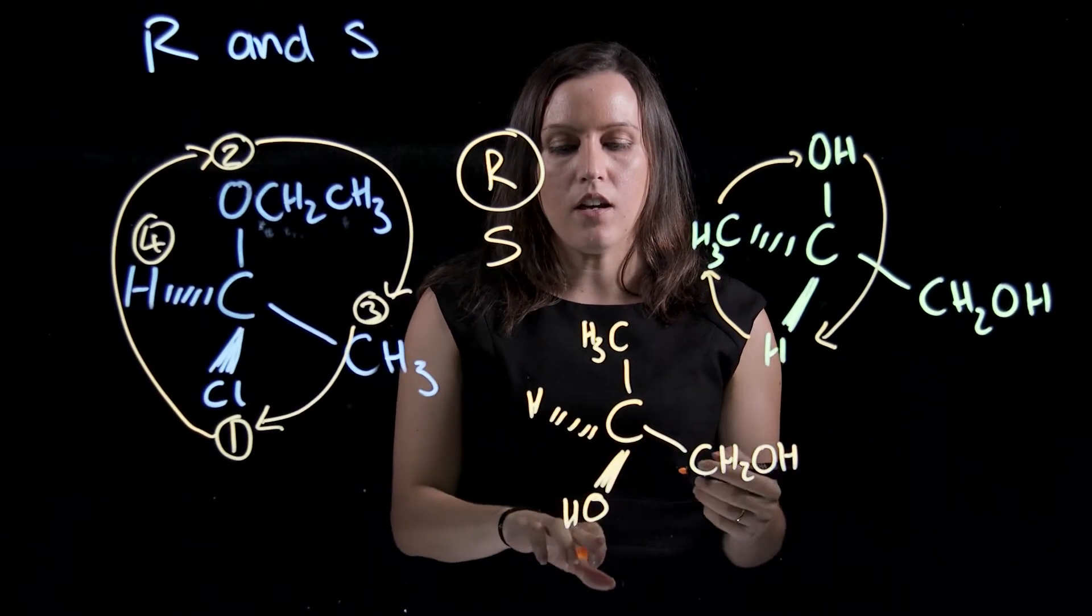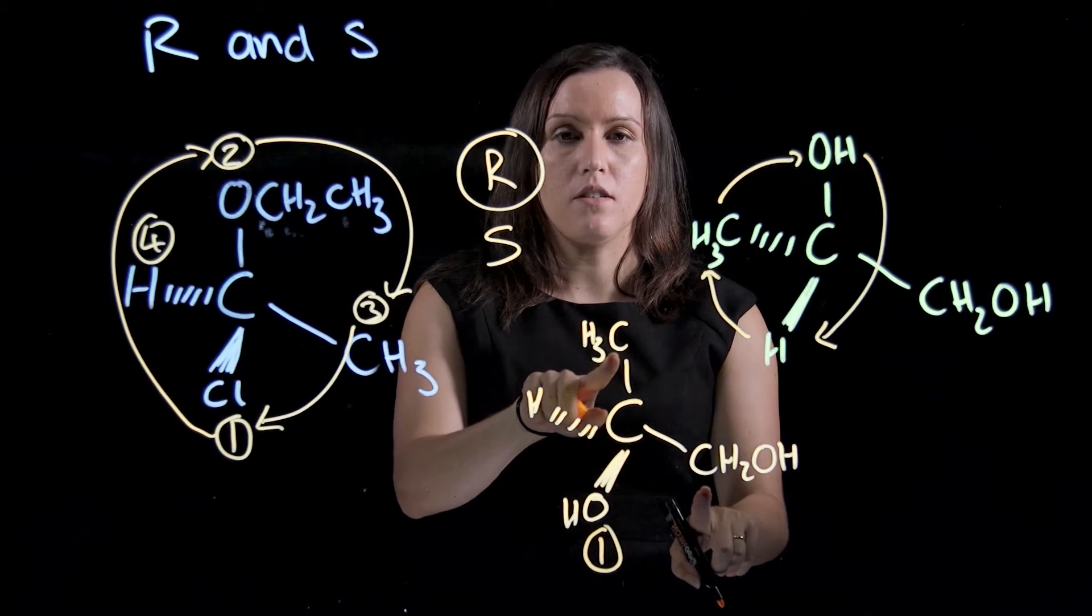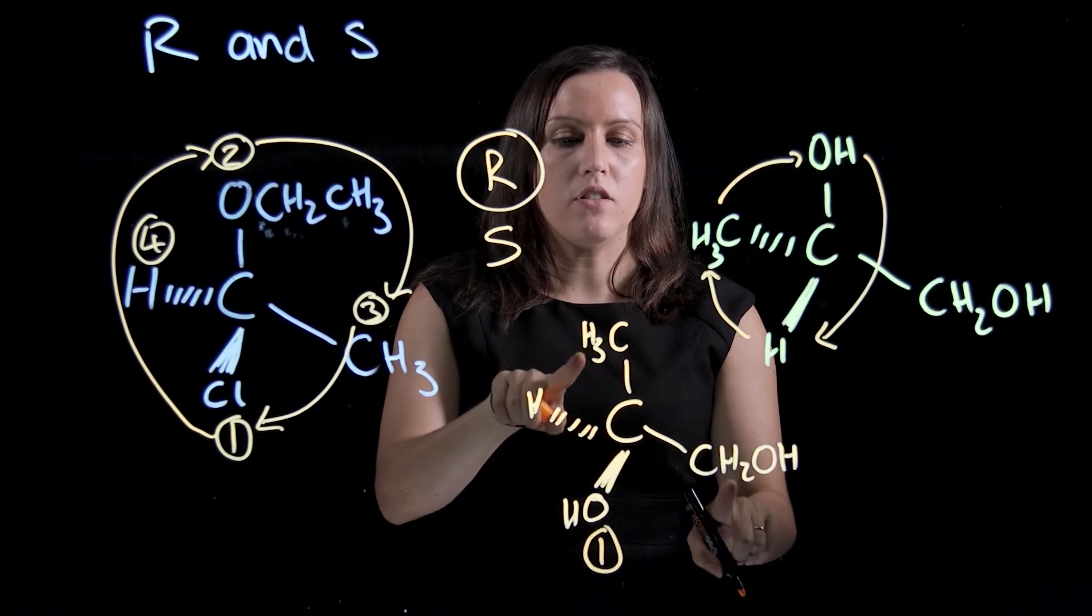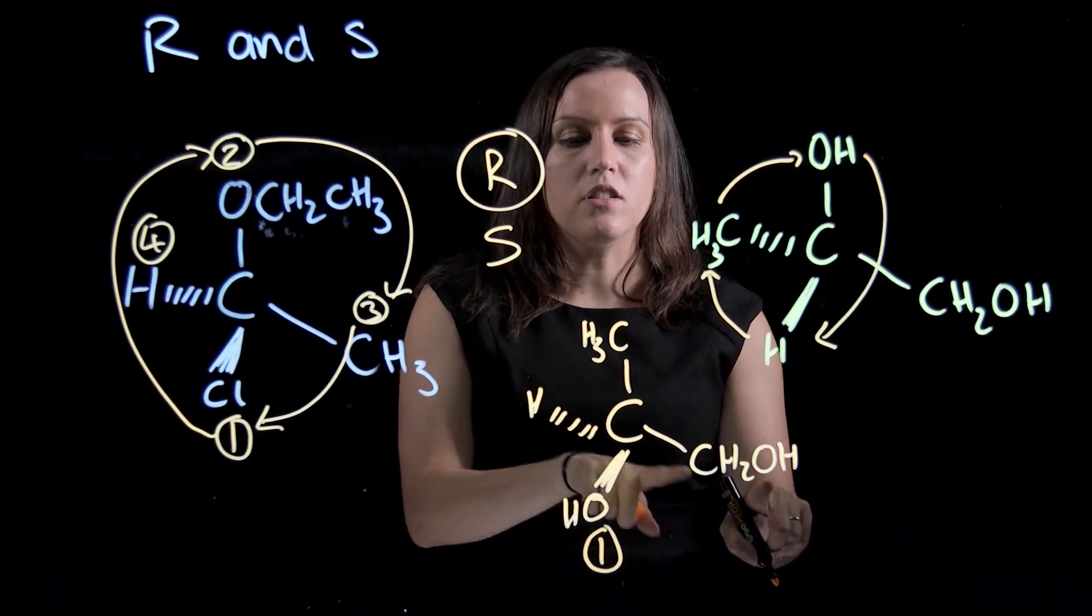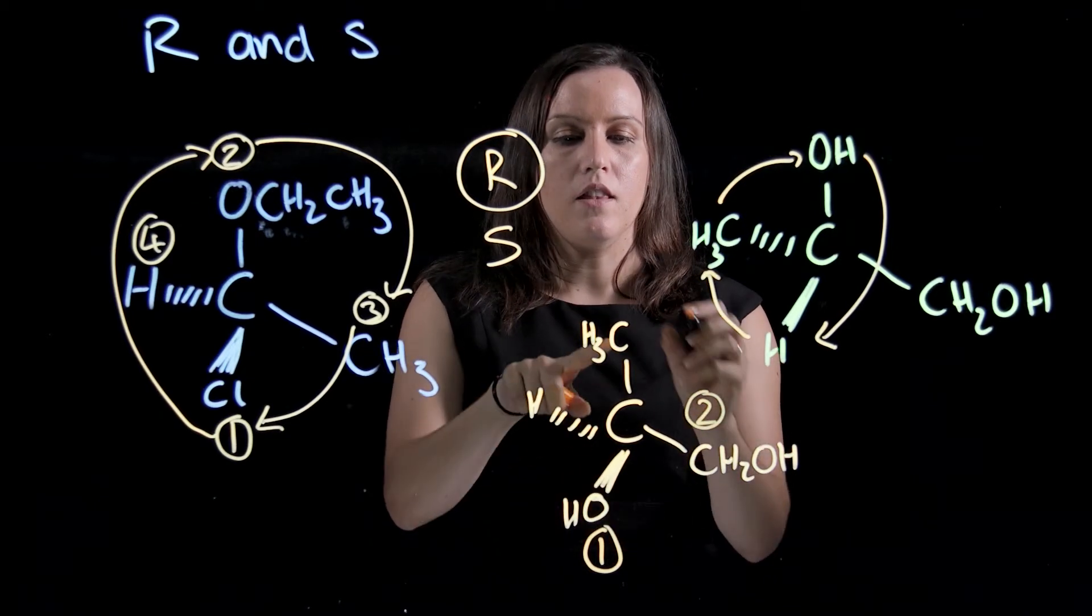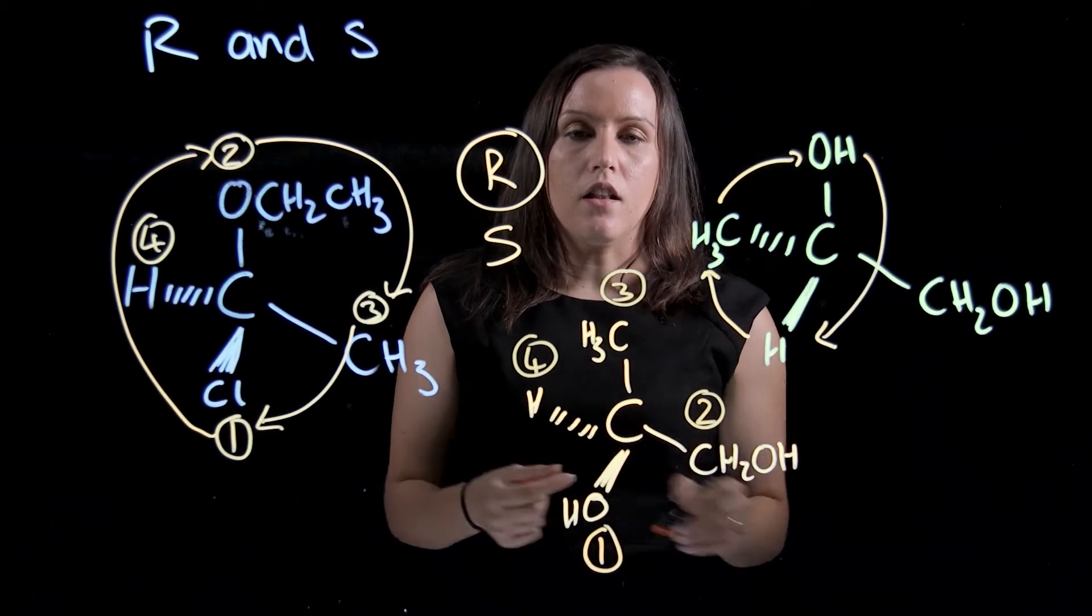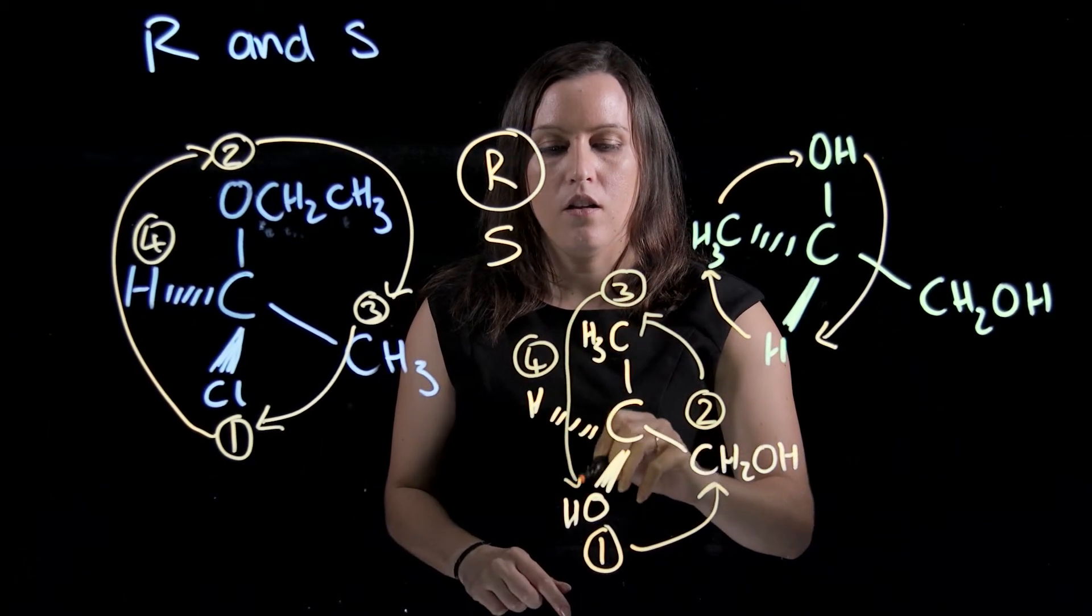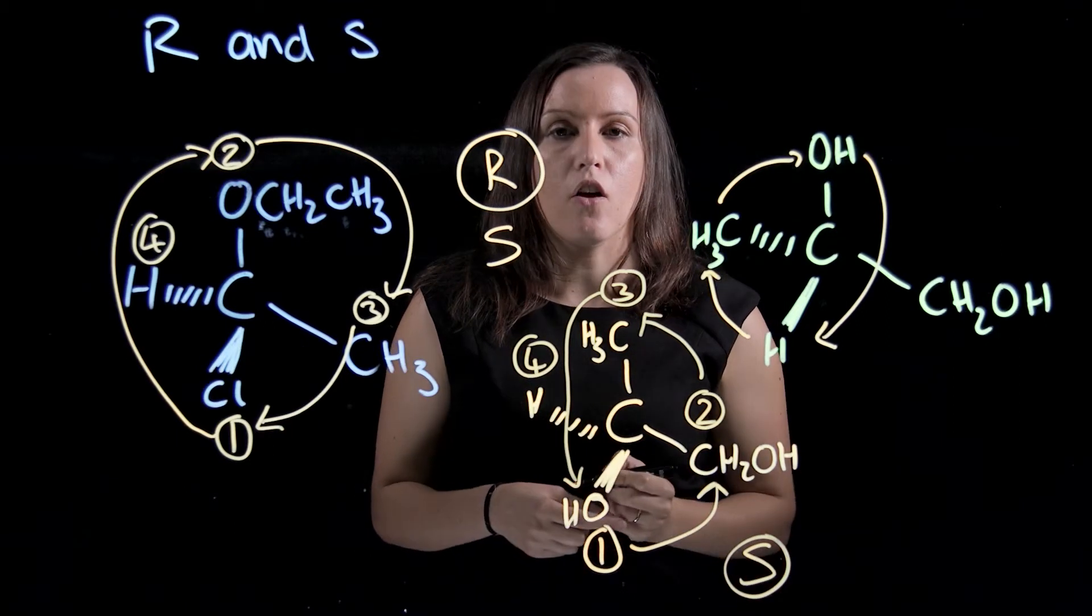Now we've got it in the right configuration, we can then assign our orders. Going for the highest order here, we will have our oxygen that comes out at 16. Then we've got an example where we've got two carbons bonded. When we have two carbons, we need to work our way out. The next bond is three hydrogens versus two hydrogens and an oxygen. Because we have the oxygen rather than the hydrogen in that third position, this one would be number two. This one would be three, and this one would be four. So linking them up, one to two, two to three, leave out four, then three to four. We have an anticlockwise, so it would be an S conformation.